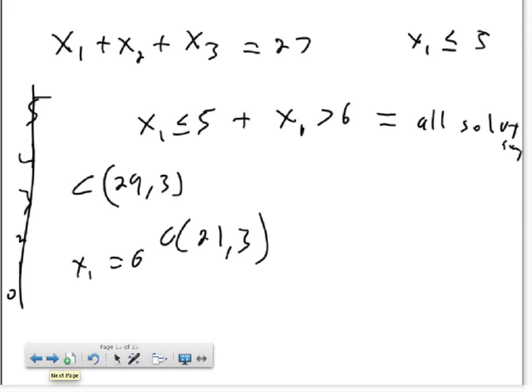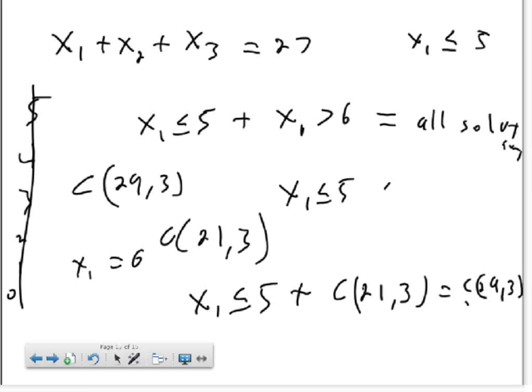Now we know the number of combinations where x1 is greater than six and all the solutions. We can plug those in: 21 plus 3 choose 3, which must equal the total number of possible solutions. So the number of solutions where x1 has five or fewer elements would be the total number minus when x1 has greater than six elements.